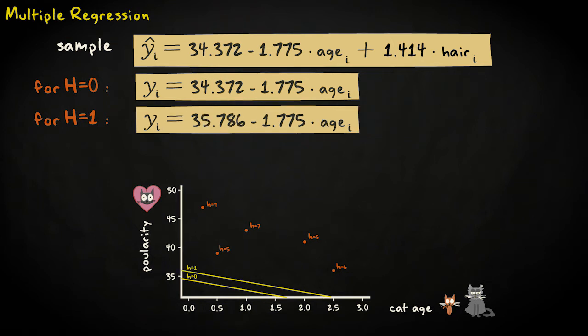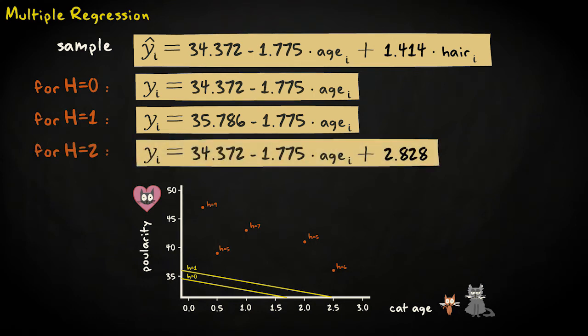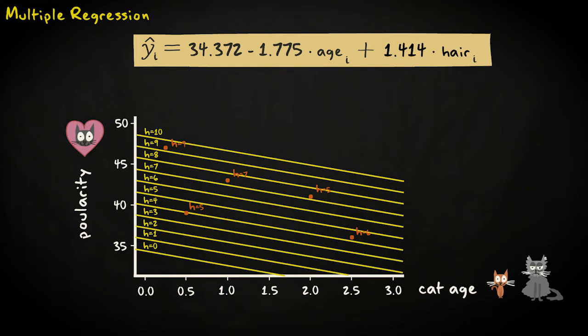If we enter a hairiness score of 2, we get y hat sub i equals 34.372 minus 1.775 times age sub i plus 2.828, which equals 37.200 minus 1.775 times age sub i. The regression lines predicting popularity with cat age at given values of hairiness all run parallel.